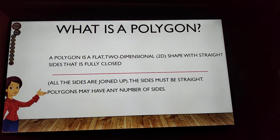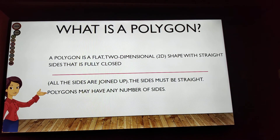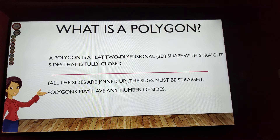What is a polygon? A polygon is a flat two-dimensional shape with straight sides, but it's fully closed. That means all the sides are joined up.